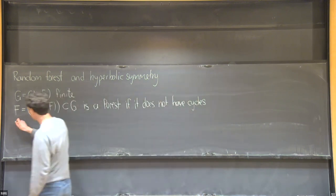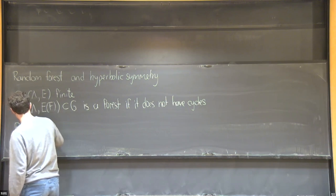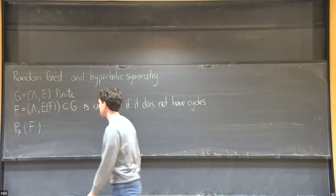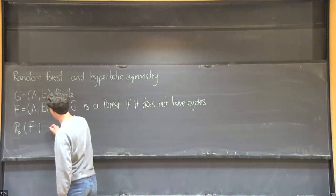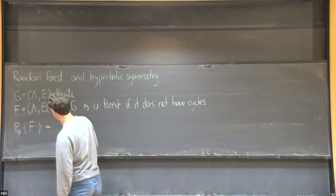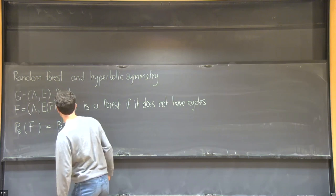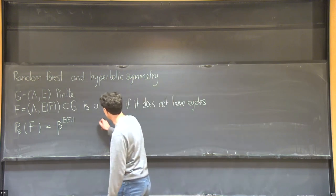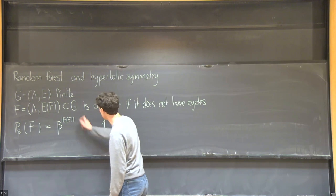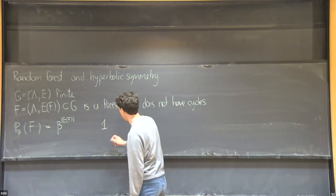The probability measure that we consider is supported on forests and assigns a probability proportional to a parameter beta to the number of edges in the forest — to each forest. I'd like to write this out so that there's an indicator function that F is a forest.